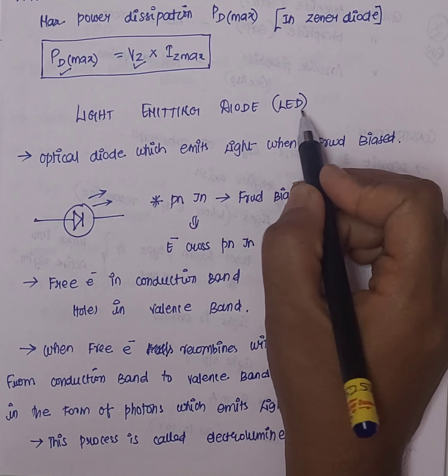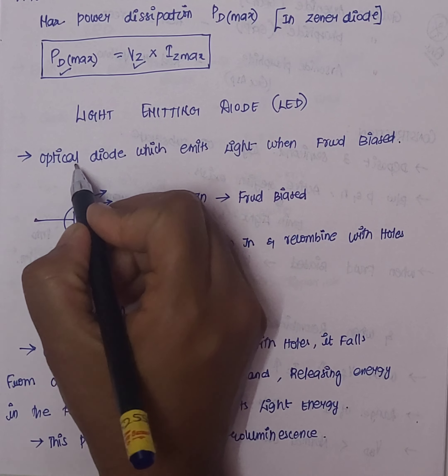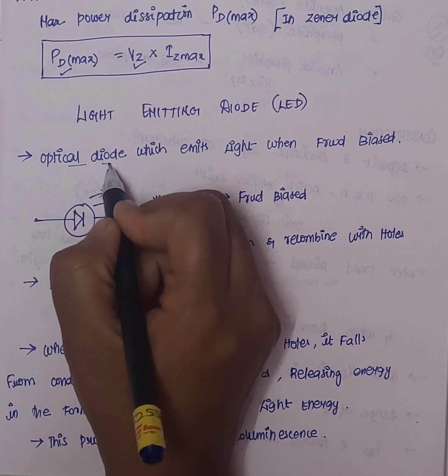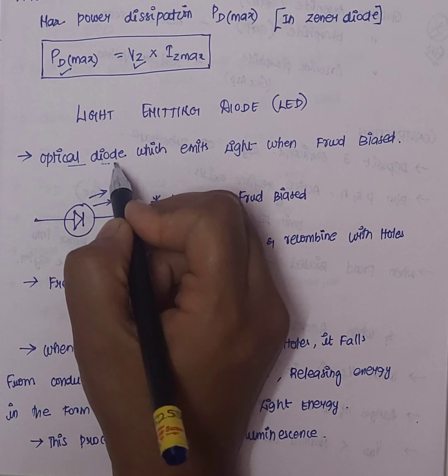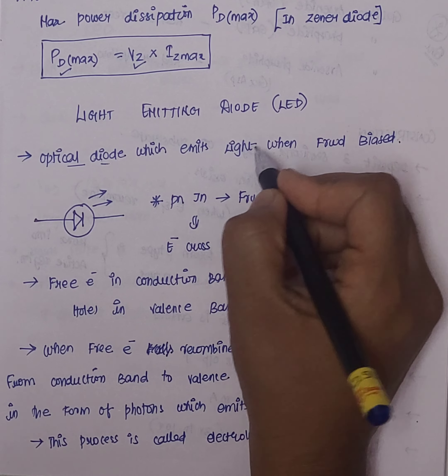This LED is an optical diode. It will emit light when forward biased. This is a unique feature of this diode.